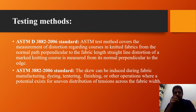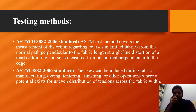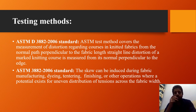ASTM D382 covers the measurement of distortion of courses in knitted fabrics from the normal path perpendicular to the fabric. The straight-line distortion of the marked knitting course is measured from its normal perpendicular to the edge. Measurements are performed at three places spaced as widely as possible along the length of the fabric, with a minimum examined length of 1 meter. No measurements are to be made closer to the ends of the roll or piece of fabric than 1 meter. A distinctive color yarn or pattern line across the width can be incorporated within the knitted structure, or a suitable marker should be used to trace the knitting course.